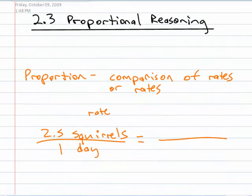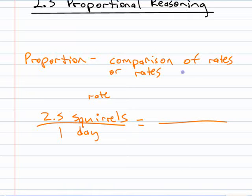Comparison of rates or ratios. So the one that we have here is 2.5 squirrels for one day. If I want to compare it to something else, like in four days, how many squirrels would walk by the fence? I actually already saw a couple today, so we're almost at the 2.5.